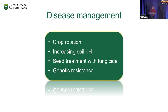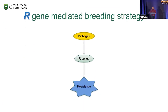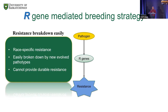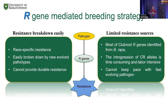There are several ways to control this disease: crop rotation, increasing soil pH, and seed treatment. But the most important way is using genetic resistance, which largely relies on R gene-mediated breeding strategies. However, this strategy faces challenges — R gene-triggered resistance is race-specific and easily broken down by new pathotypes, so it cannot provide durable resistance. Most clubroot R genes identified so far come from related Brassica species, and introgressing those alleles is time-consuming, labor-intensive, and cannot keep pace with a fast-evolving pathogen.